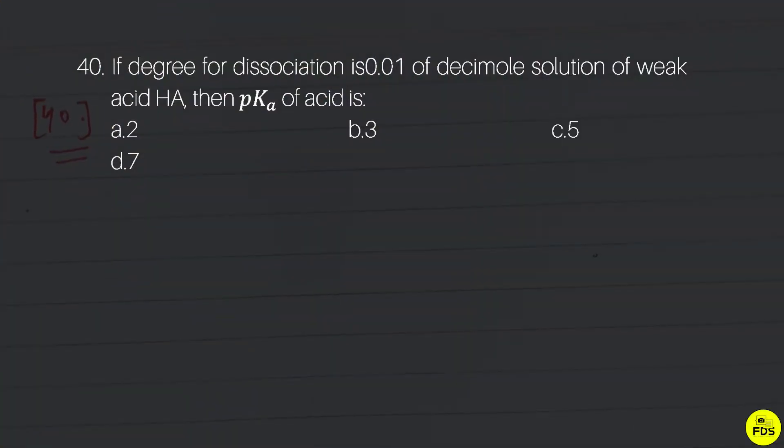If degree of dissociation is 0.01 of decimolar solution of weak acid HA, then pKa of acid is equal to what value?